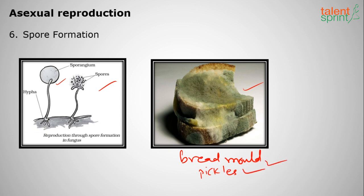So the six methods of asexual reproduction are: cutting, grafting, layering, budding, fragmentation, and spore formation. This is all for part one of reproduction in plants. We shall meet in the next session. Thank you so much.